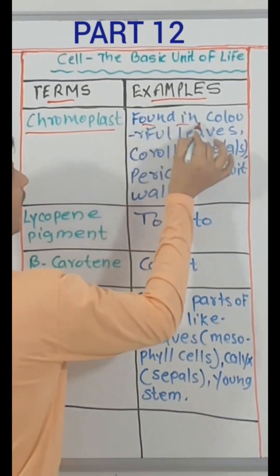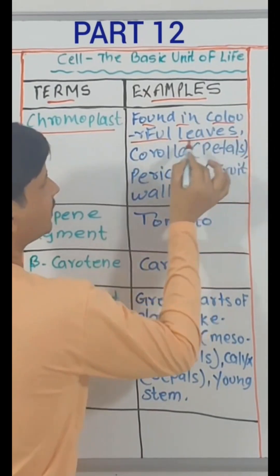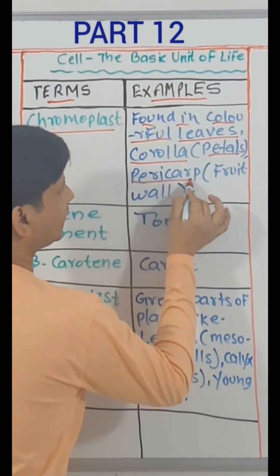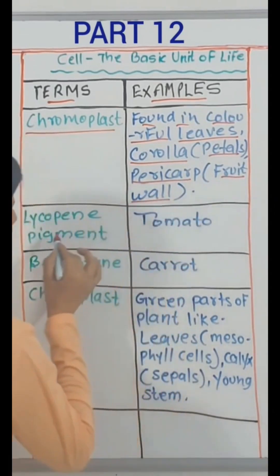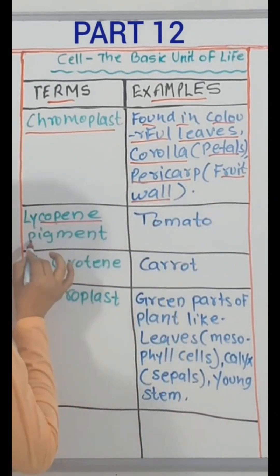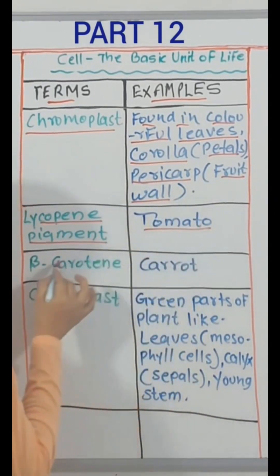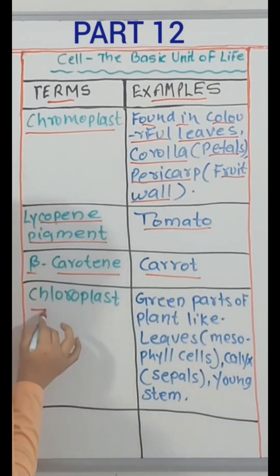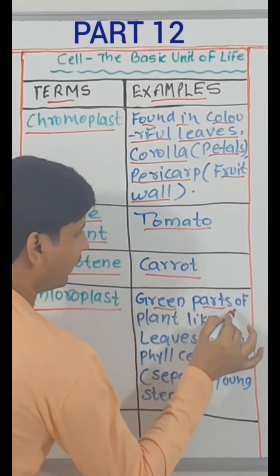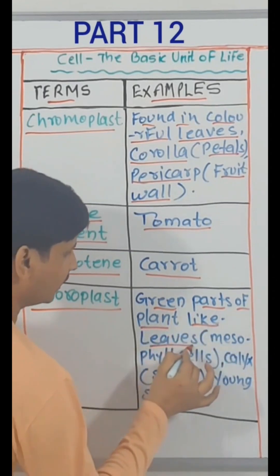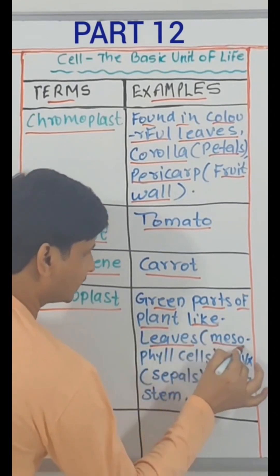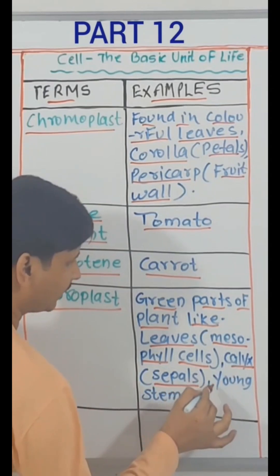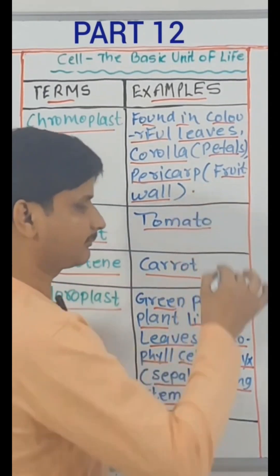Chromoplast — found in colorful leaves, corolla (that is petals), pericarp (that is fruit wall). Lycopene pigment — tomato. Beta-carotene — carrot. Chloroplast — green parts of plant like leaves, that is in mesophyll cells, calyx (that is sepals), young stem.